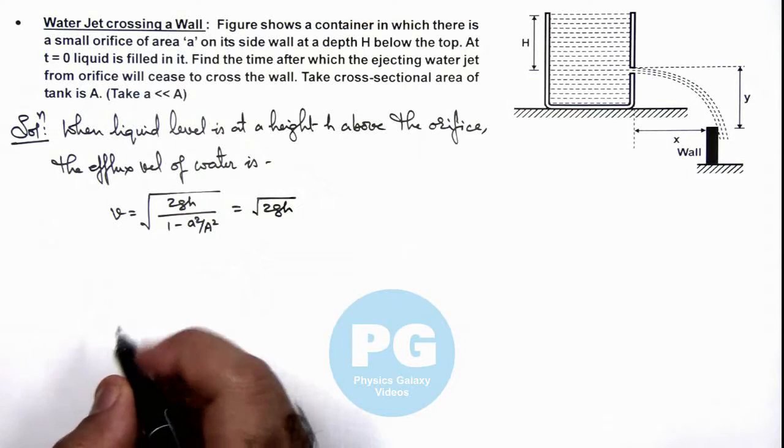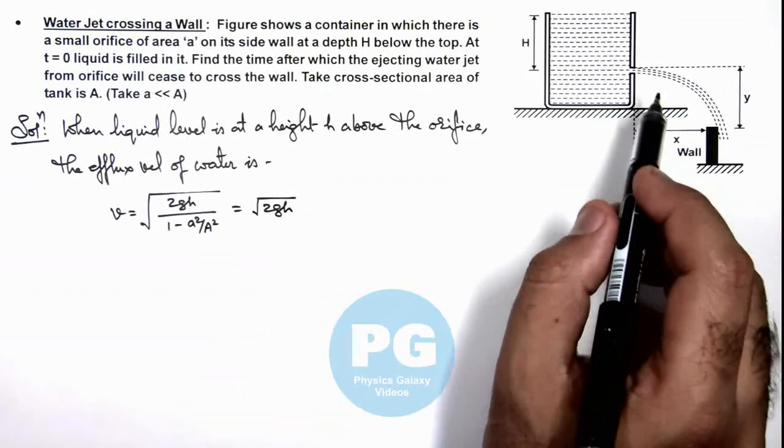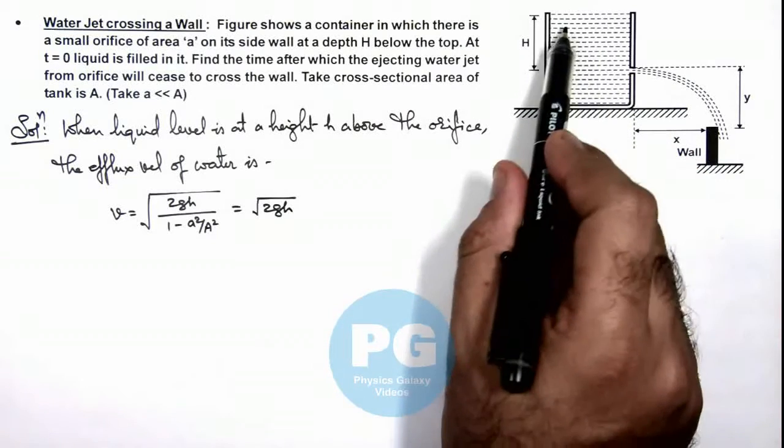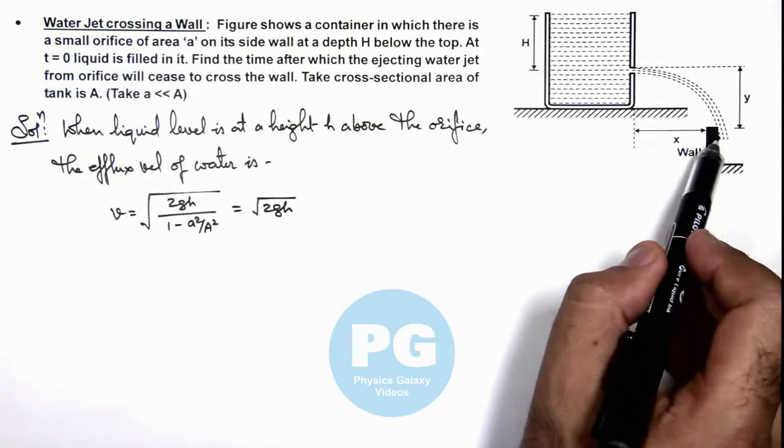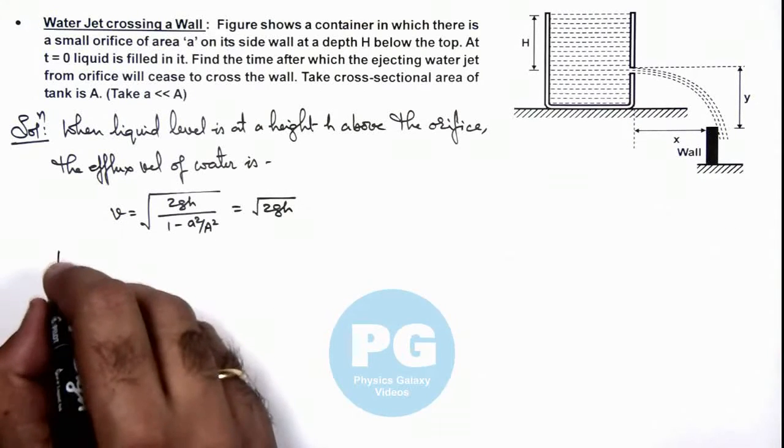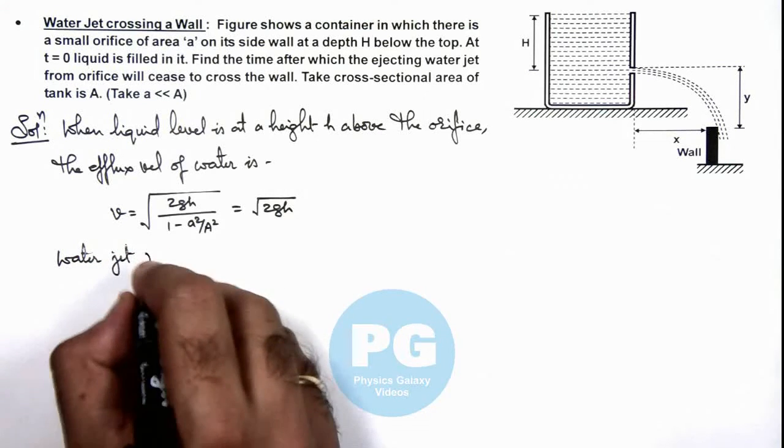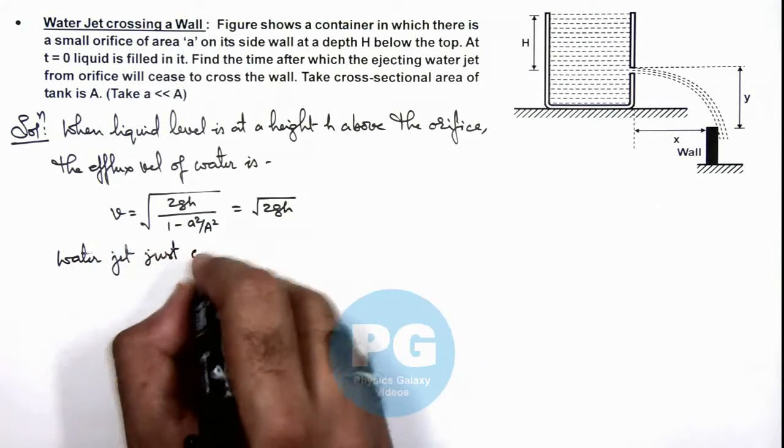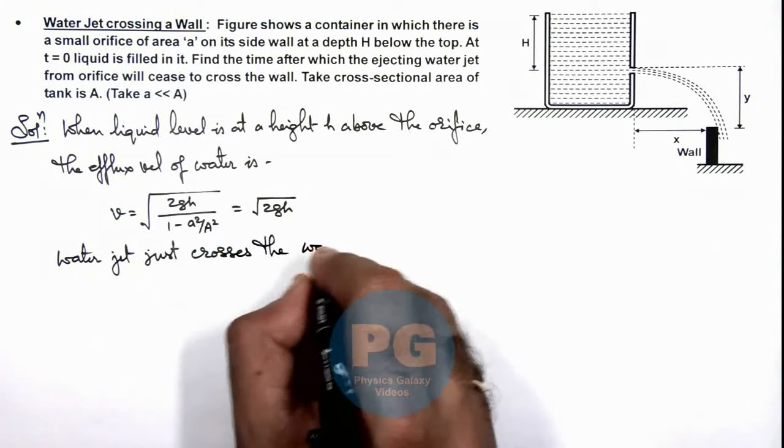And in this situation with this velocity water jet is coming out. So if we wish to calculate the height of water level when it'll just be crossing the wall, then we can write: water jet just crosses the wall when...